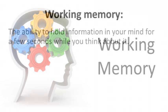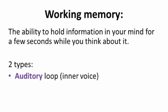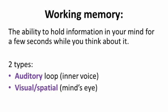Working memory is the ability to hold information in your mind for a few seconds while you think about it. It's quite separate from long-term or permanent memories. And there are two types. There's an auditory loop, the inner voice, when you're saying something to yourself without saying it aloud. And the visual or spatial memory, the mind's eye, when we're imagining something.